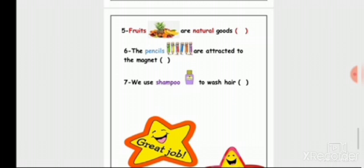Turn the page. Number five: fruits are natural goods - yes, right. Number six: pencils are attracted to the magnet. No - pencils are not attracted to the magnet. From the magnet lesson, pencils, books, chairs, and balls are not attracted to the magnet.